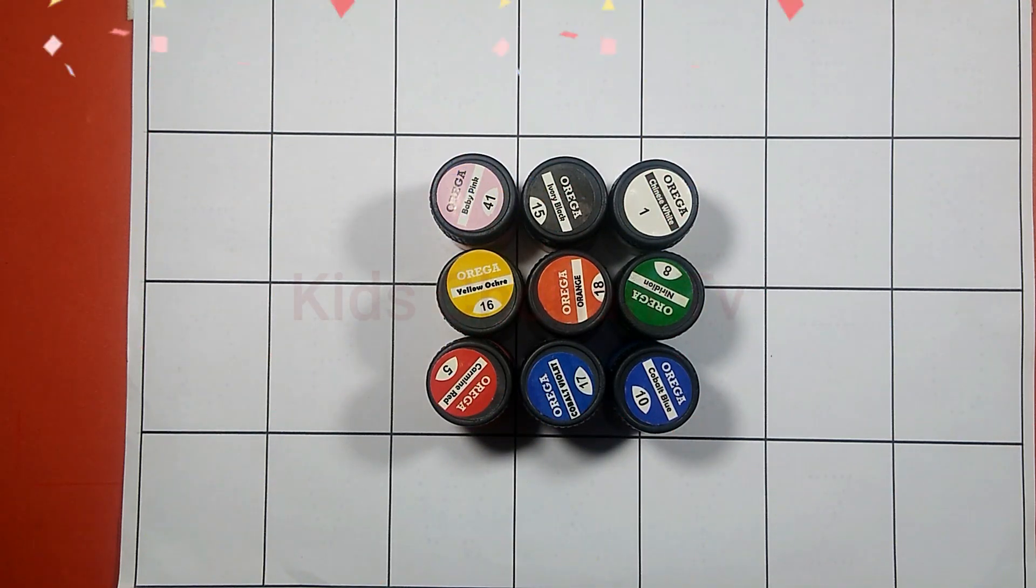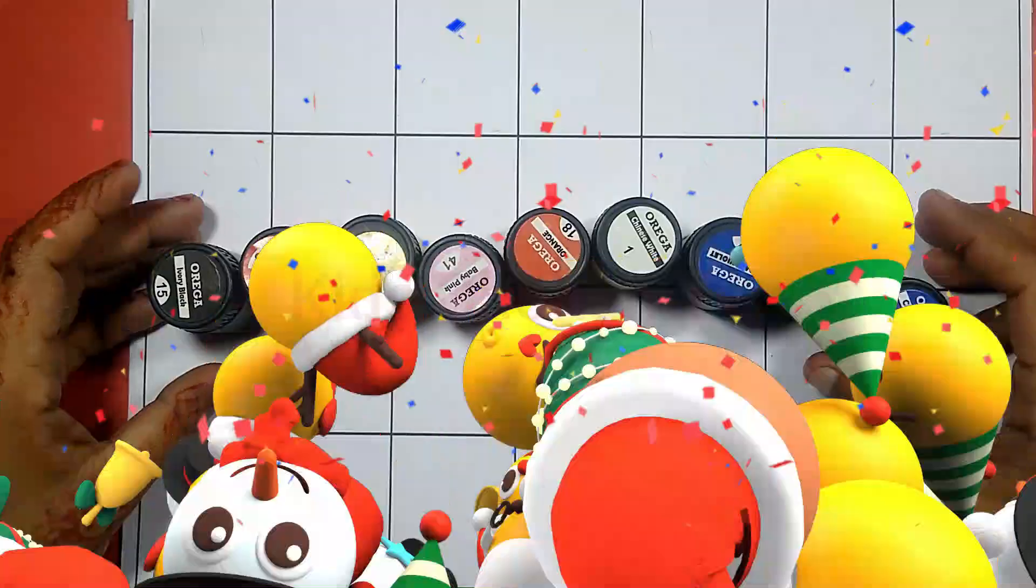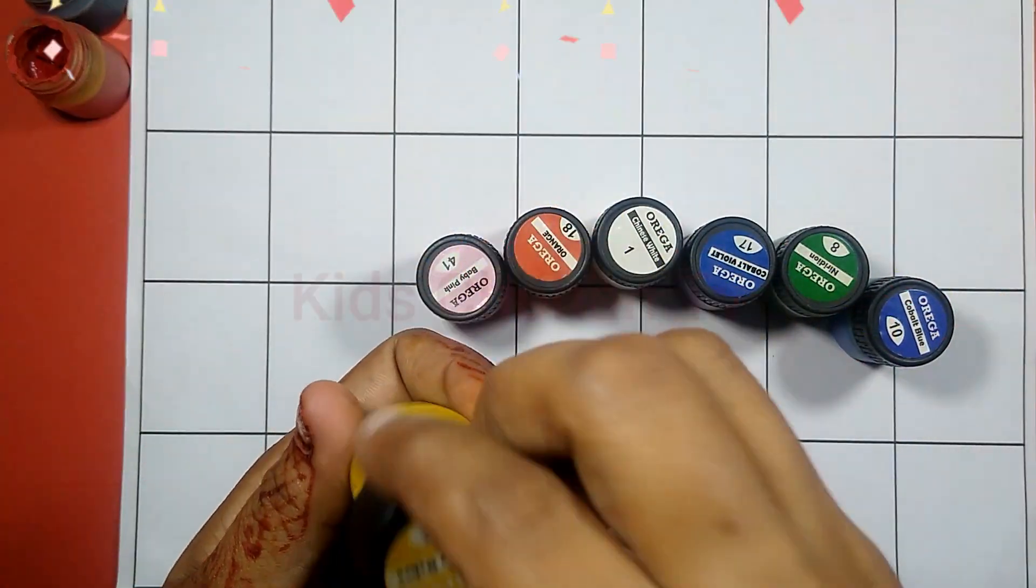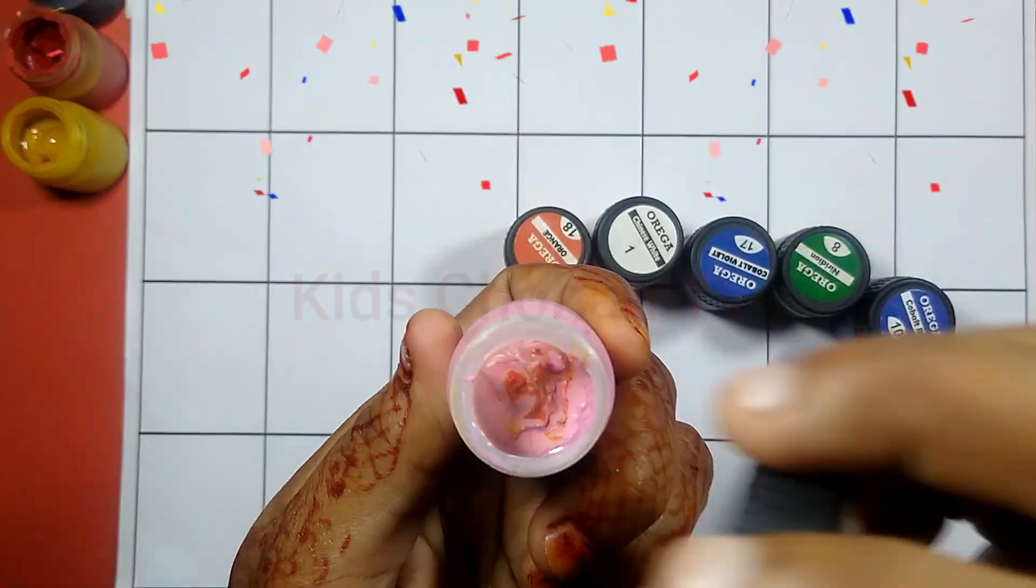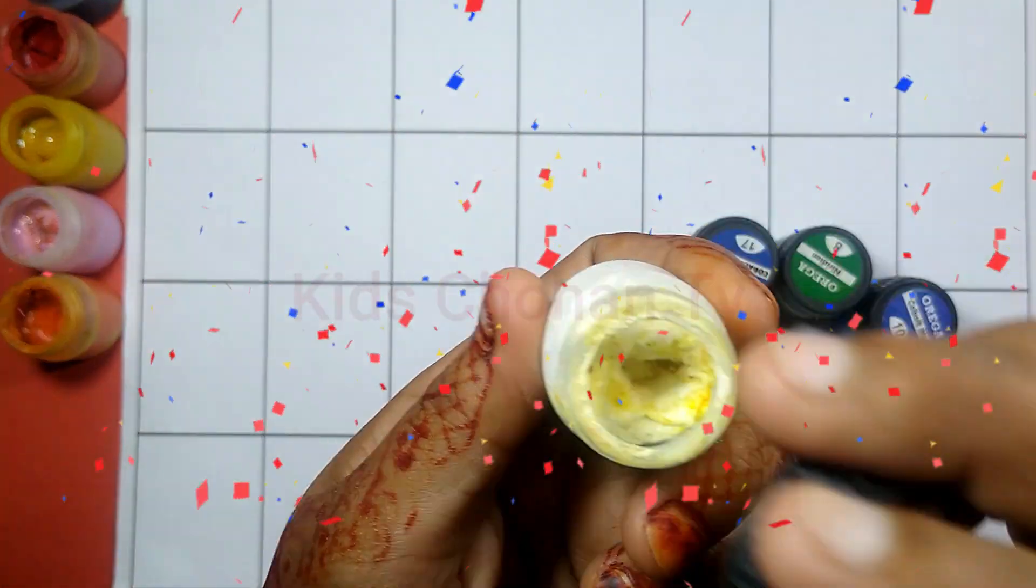Hello kids, welcome to my new videos. Color names: black color, red color, yellow color, pink color, orange color, white color.